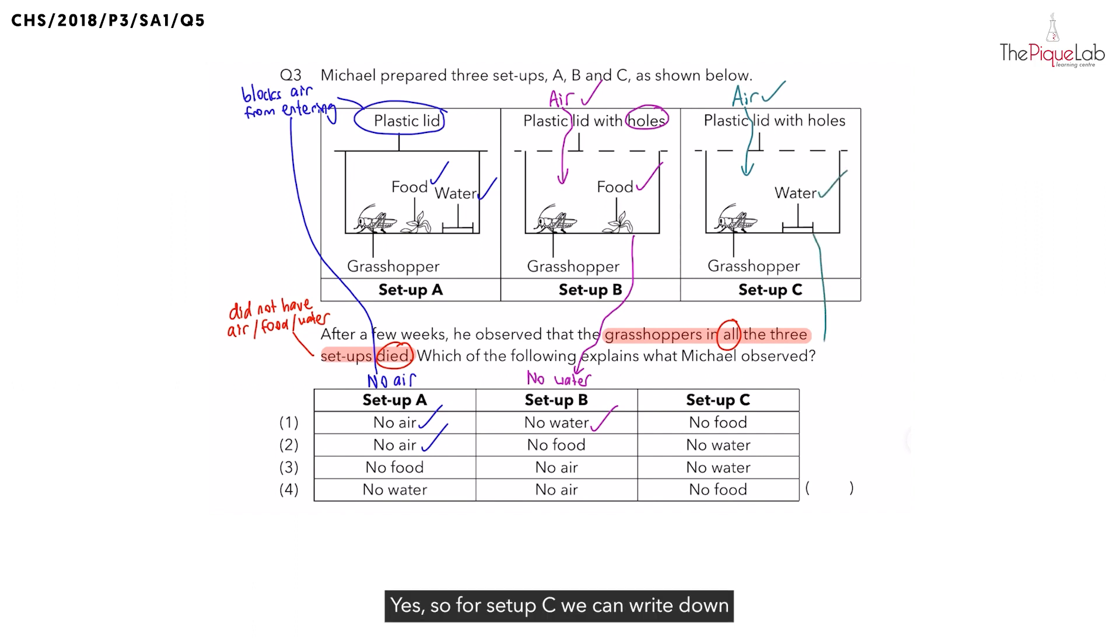So, for setup C, we can write down that the grasshopper died because there is no food. Which means, which options can we take? We can take options 1 and 4. So, taking a look at the 4 options, which is the correct answer? The correct answer has to be option 1.